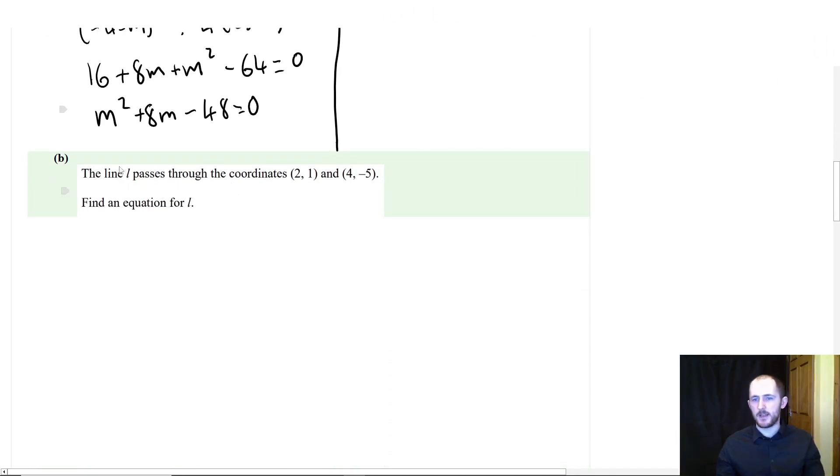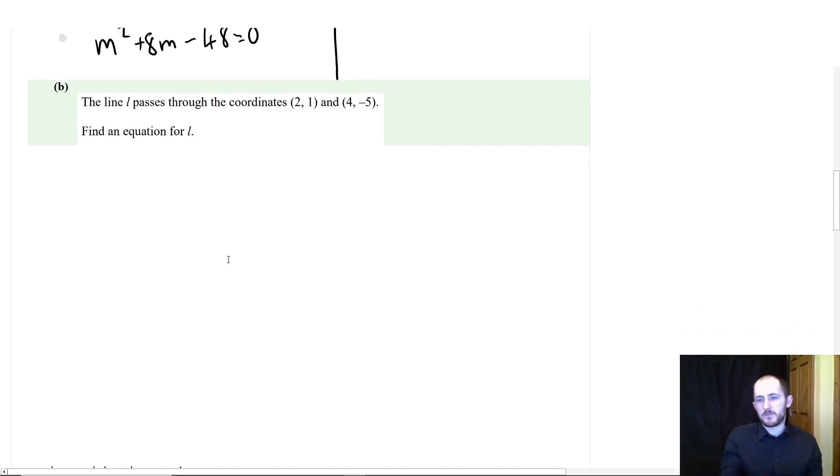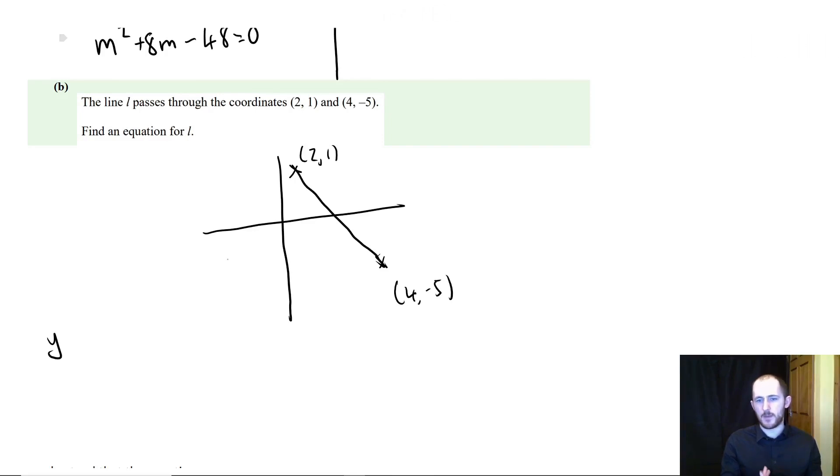Part b. So this is the kind of classic. A line passes through two coordinates. Find an equation for l. So let's draw a little diagram to help us out here. So that's 2, 1 and 4, minus 5 would be down here. So we have a line going like this. We can use y minus y1 equals m times x minus x1.